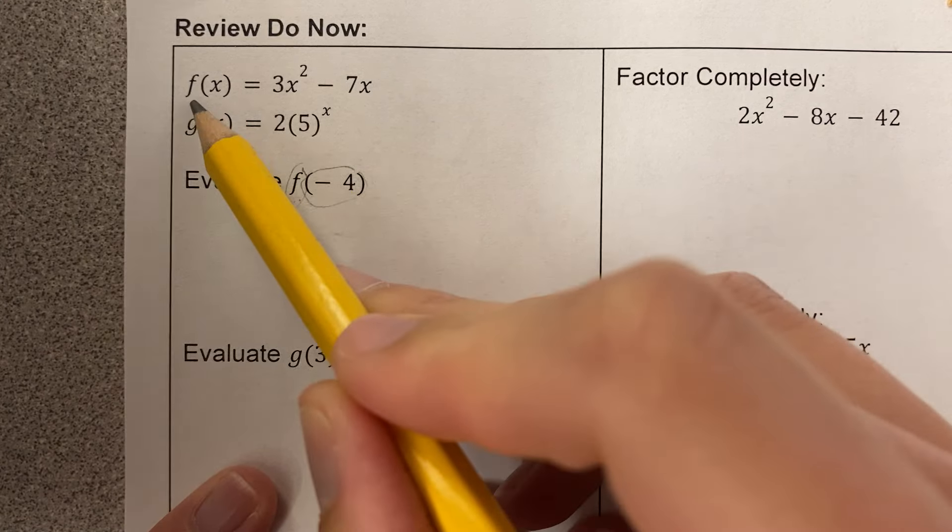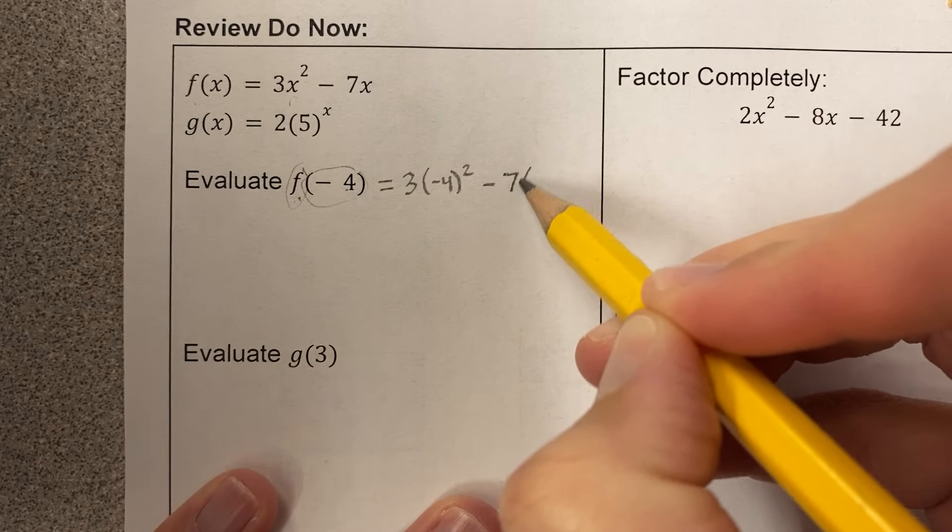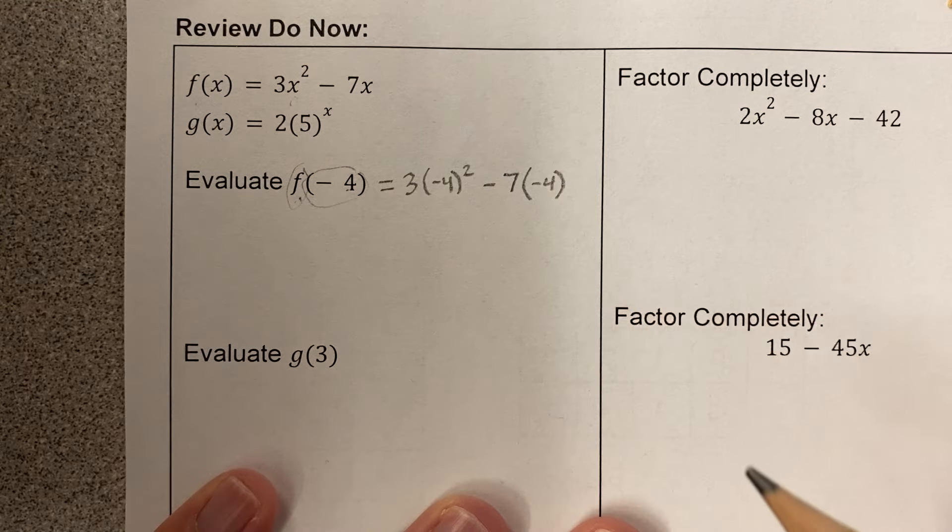So f of negative 4 is 3x squared minus 7x. I'm plugging in negative 4 for x.